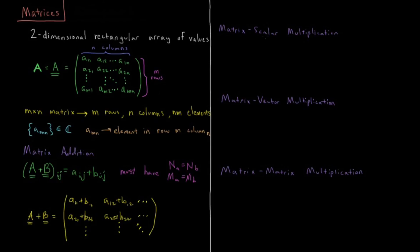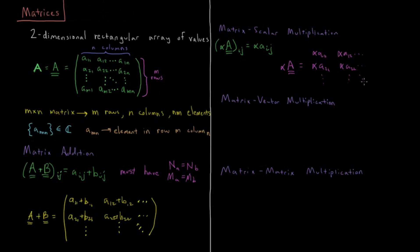What about matrix-scalar multiplication? If we have alpha times A, the result is simply that each individual element is multiplied by alpha. So alpha times A gives alpha·A11, alpha·A12, alpha·A21, alpha·A22, and so on across all dimensions. You can multiply any scalar times any matrix — a scalar doesn't have any direction, so there are no restrictions or special rules.